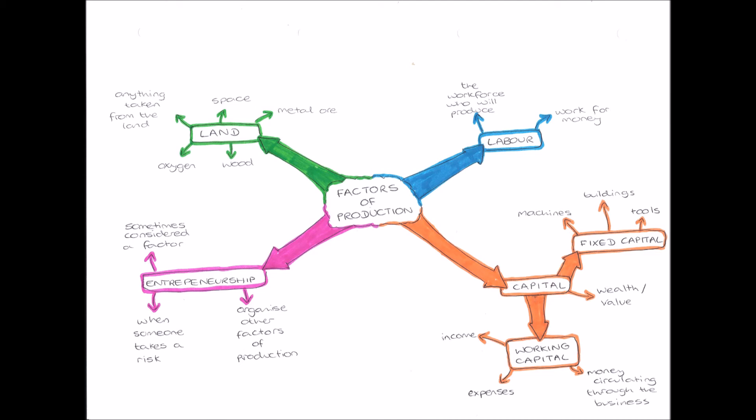Another type of capital which is sometimes considered here is human capital, and human capital is the same as labor, the workforce who will produce. And finally, we have entrepreneurship. Entrepreneurship is not always considered a factor of production; some people consider it a factor and some don't. An entrepreneur is somebody who takes a risk in order to make profit. They are willing to take a risk to make profit and maximize their economic welfare, and entrepreneurs also organize the other factors of production.